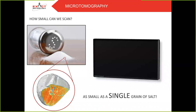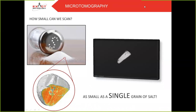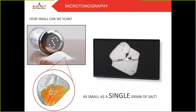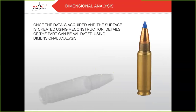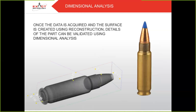Microtomography — how small can we scan? Actually fairly small. In this case, we scanned a grain of salt pulled straight from the kitchen, and it has 5% porosity. On to dimensional analysis: once the data is acquired and the surface is created using reconstruction, details of the part can be validated using dimensional analysis. In this specific case, you could also go in and count each grain of gunpowder if you so choose.